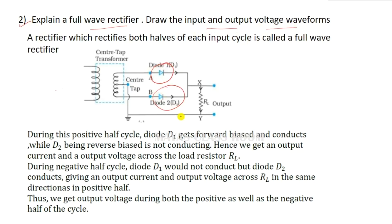The full-wave rectifier uses two diodes, D1 and D2. During the positive half-cycle of AC, we get a positive output.